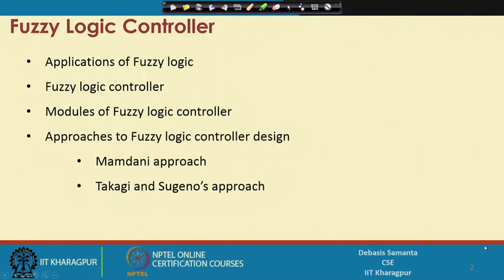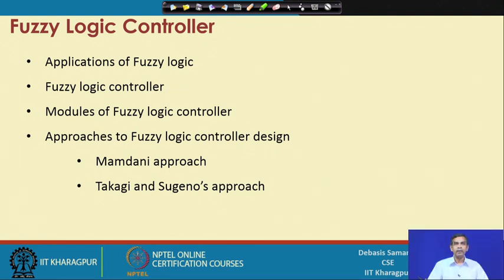We have discussed how different operations related to fuzzy elements can be carried out. Now we are in a position to discuss designing a complete fuzzy system. The fuzzy system we are going to discuss is very popular in the fuzzy world and is called the fuzzy logic controller. We will discuss how a fuzzy logic controller can be designed. There are broadly two approaches: the first is called the Mamdani approach and the second is called the Takagi-Sugeno approach. We will learn about the Mamdani approach first, then the Takagi-Sugeno approach in the next lecture.